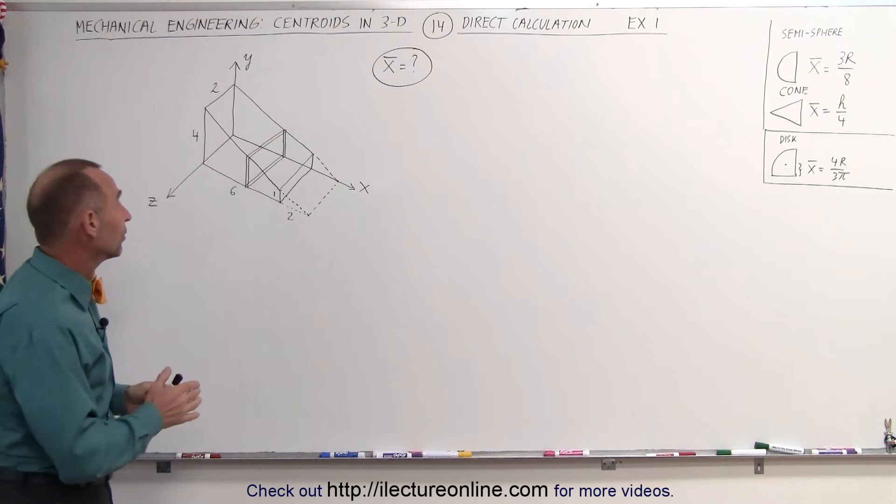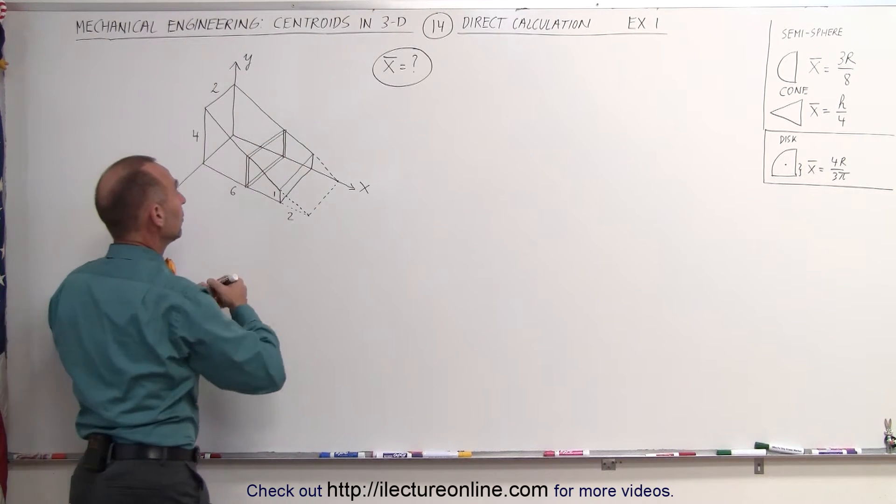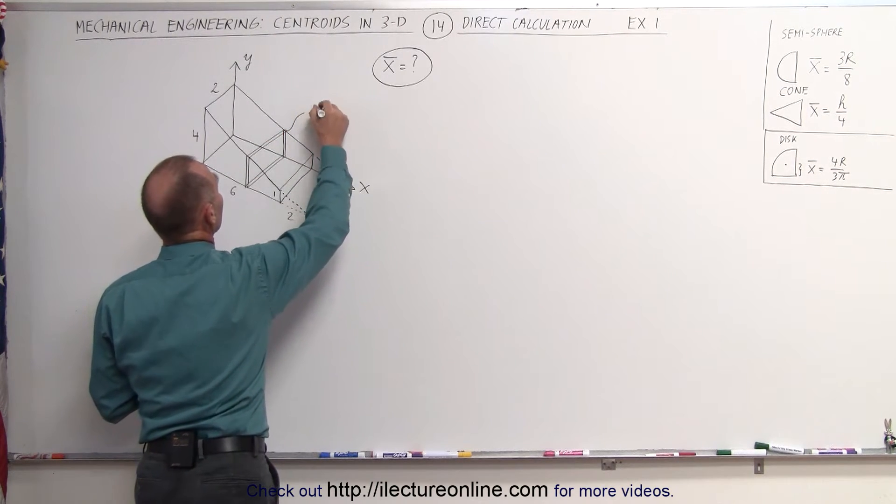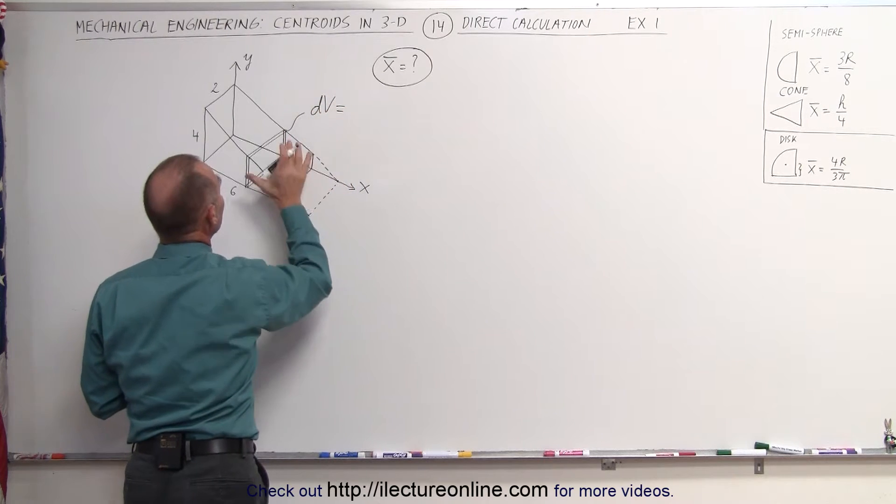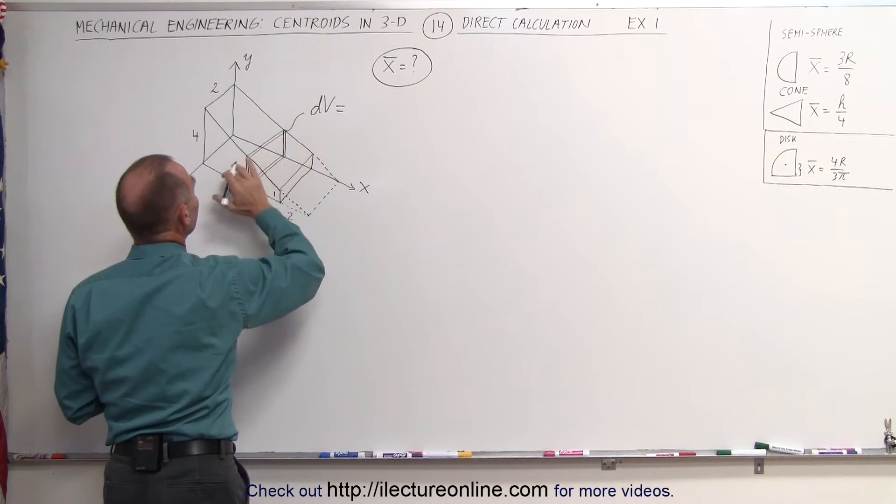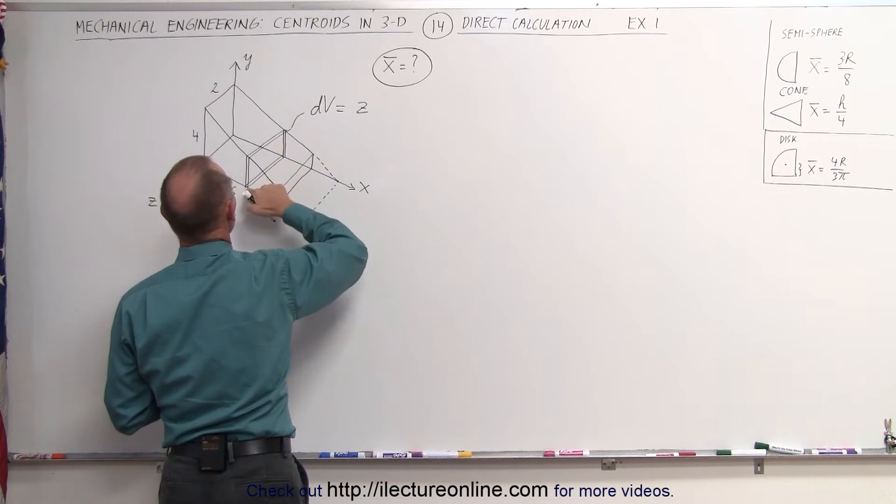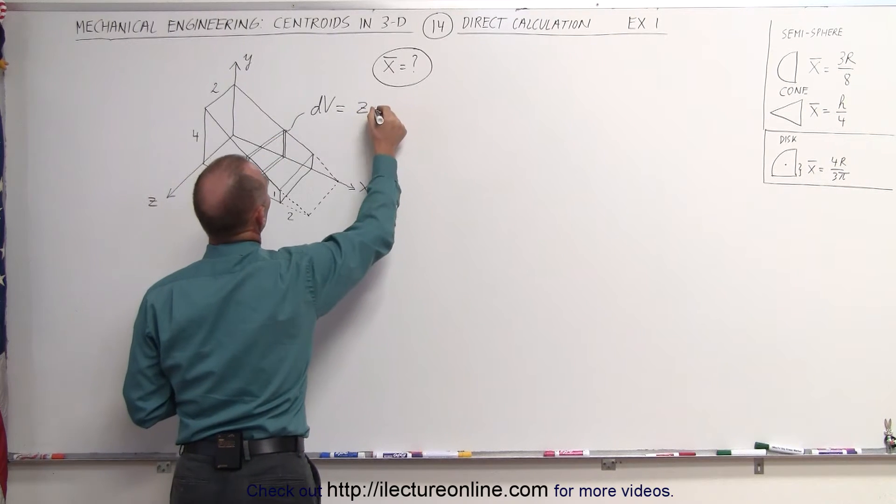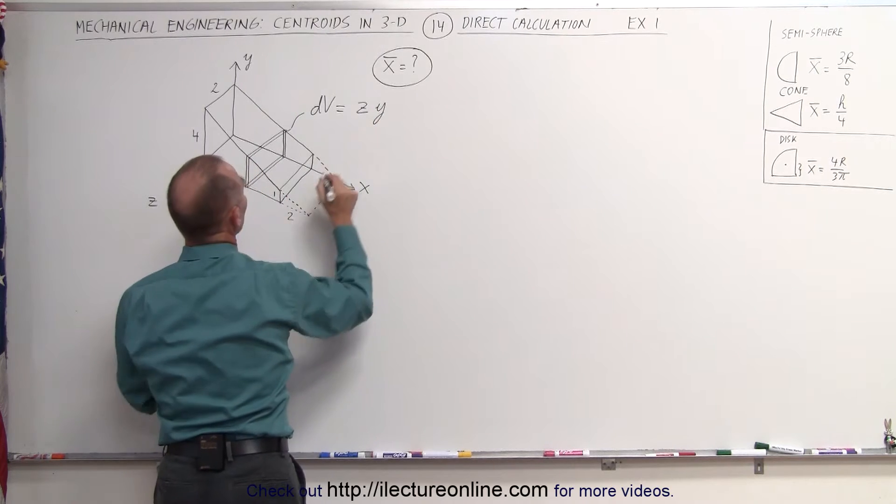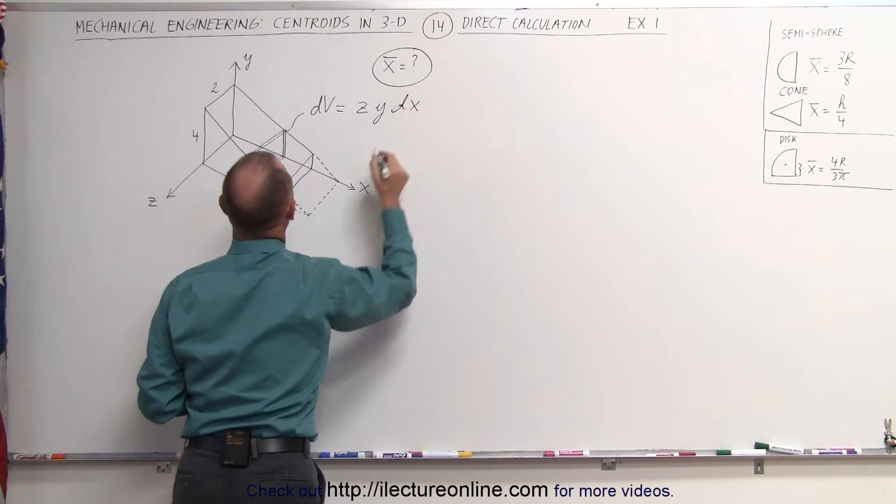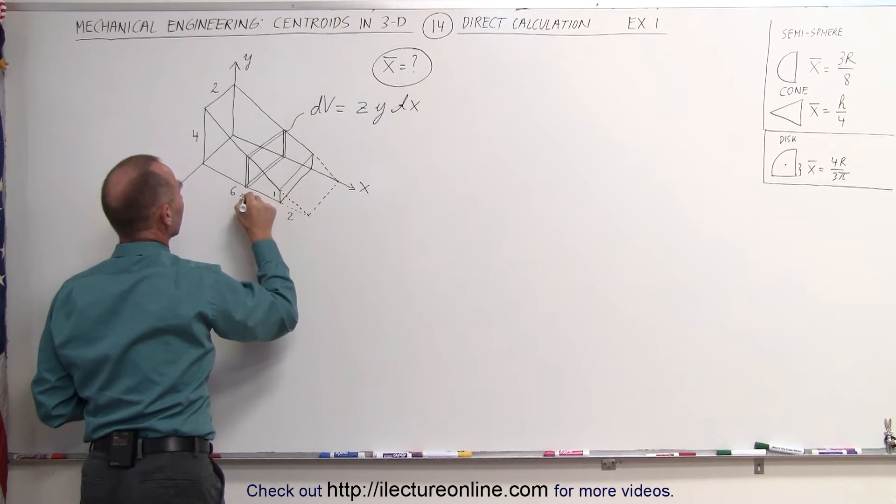What we're going to do here is take a very small volume element, small dv. The dimension of the dv is equal to the width, which is equal to z. The distance from there to there is z. The distance from there to there, which is the height, would be y. And then the thickness here would be a small little dx.